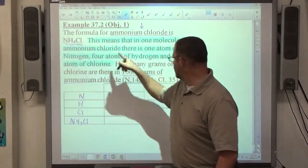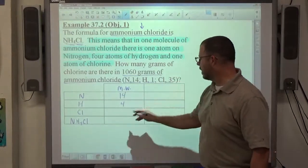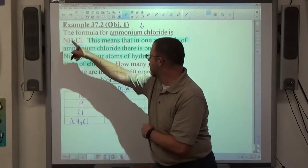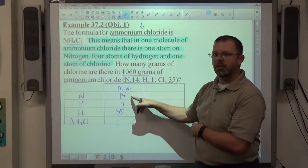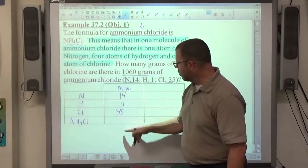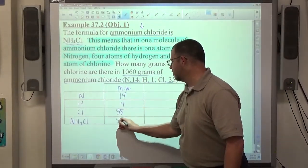There's one atom of chlorine. Every one weighs 35. 1 times 35 is 35. So again, to get these three numbers, I take how many there are times how much it weighs to get how much weight is in the molecule for that specific element. And then we add those up, 14 and 4 is 18, plus 35 is 53.